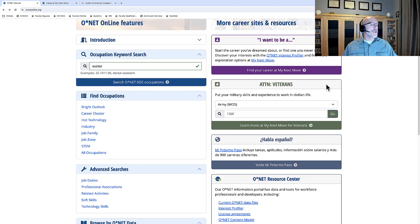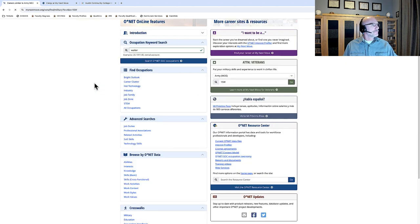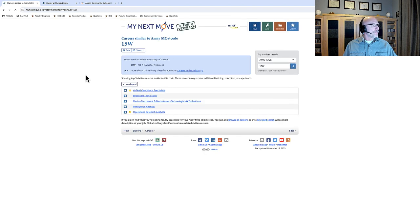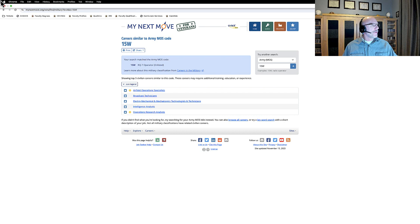Another important part of O-Net is for military veterans. Military veterans sometimes have a difficult time translating their military acquired skills into skills that are useful in the private sector. Here, let's say we use the Army as the branch. Let's say we put in 15W as the MOS. If you've been in the Army, you know your MOS. What we have here is careers similar to Army MOS code 15W. These are the careers that are similar. You can click on them and find out what sorts of skills, knowledge, and job outlook are required for that.